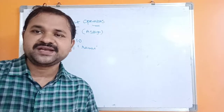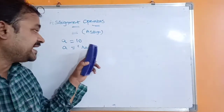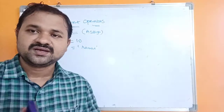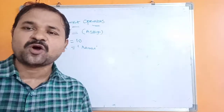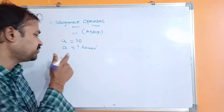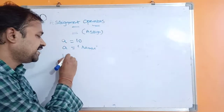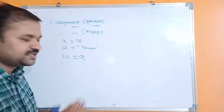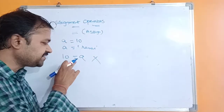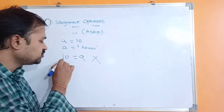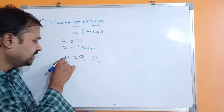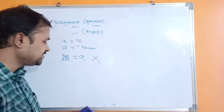It is useful in order to assign a right-hand side value to a left-hand side variable. While using the assignment operator, the left-hand side must be a variable. For example, the statement 10 = a is a wrong statement, because the left-hand side must be a variable name — it should not be a constant.